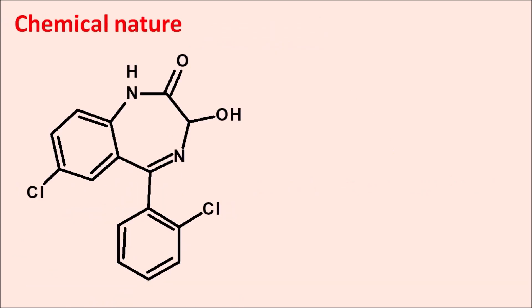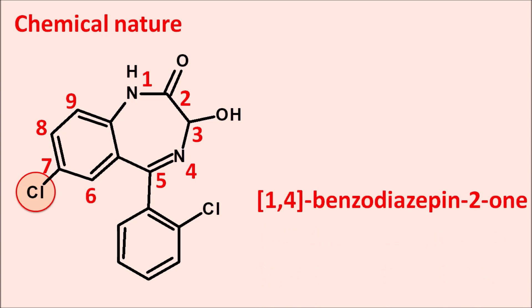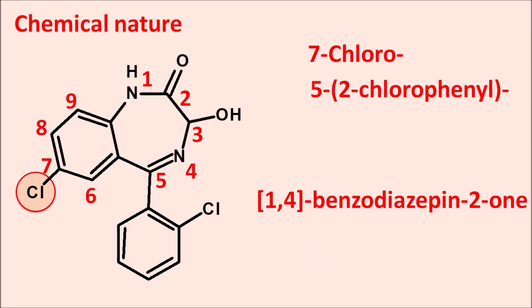Looking at the chemical structure of lorazepam, we can identify the benzodiazepine ring system. Numbering from the nitrogen: positions one through nine. The chlorine group is at the seventh position, which is why it has the prefix 'lor-'. The ring system is a 1,4-benzodiazepine with a ketone group at the second position, written as 1,4-benzodiazepin-2-one. Chlorine is at the seventh position (7-chloro), and another chlorine is on the phenyl ring at the fifth position (5-(2-chlorophenyl)). The third position has a hydroxyl group.